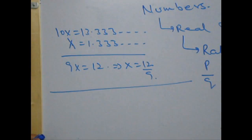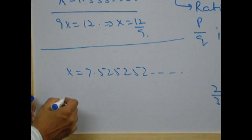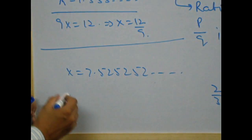Let's take another question, slightly higher difficulty level. Say, x is 7.525252 and so on. So, how to convert it into its rational form, i.e. p by q form, I will multiply x by 100.